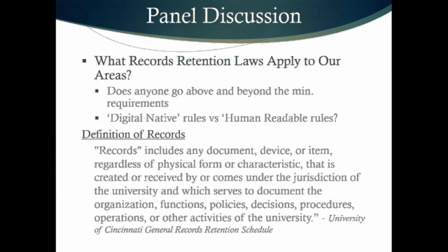For example, when Ohio State renovated their stadium, it was originally built with 107 drawings at 18×24 in 1922. The renovation in 1995 was about 1,800 drawings at 30×42. The new James Cancer Hospital was about 3,000 files. They catalog at an item level and open every single DWG and every single PDF, which becomes a significant workload at that scale.